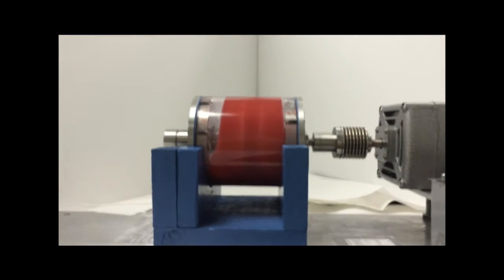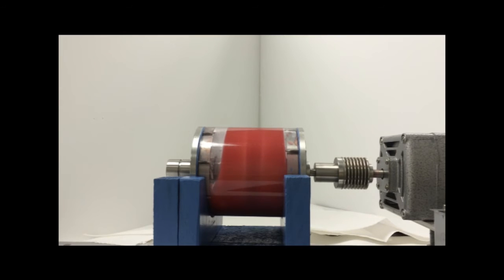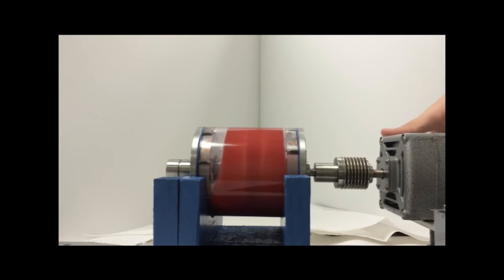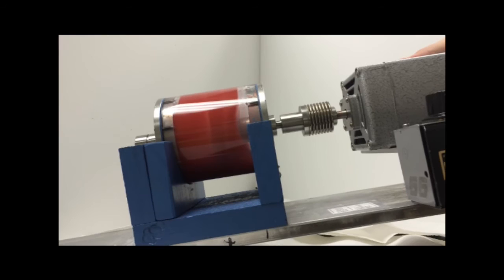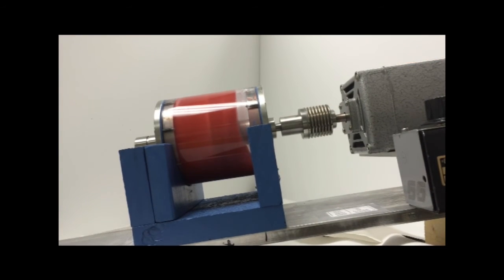But can the Centrotec seal still perform when the shaft is not horizontal? Even at this angle, the seal is generating sufficient pressure to prevent the fluid from leaking.